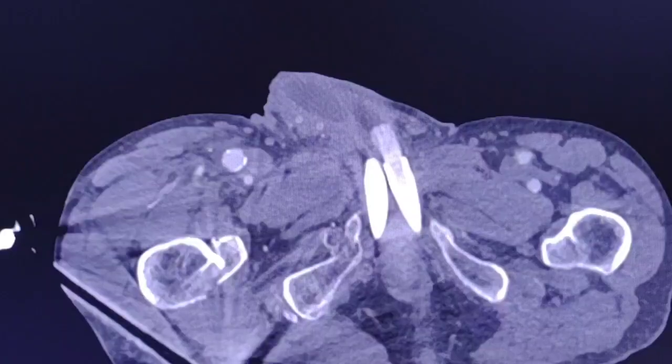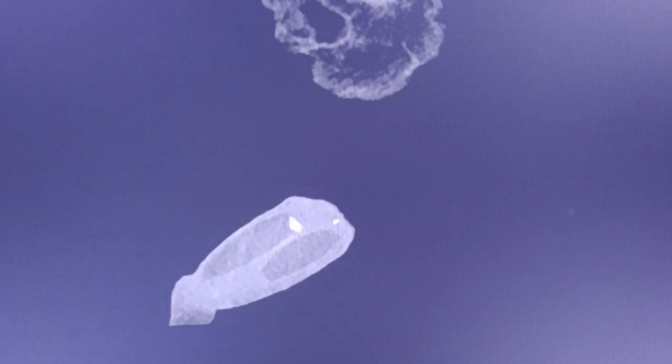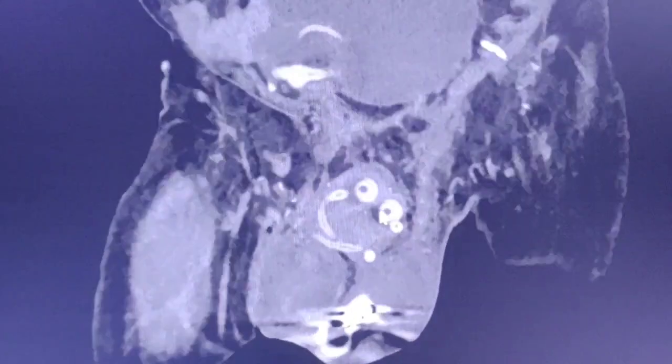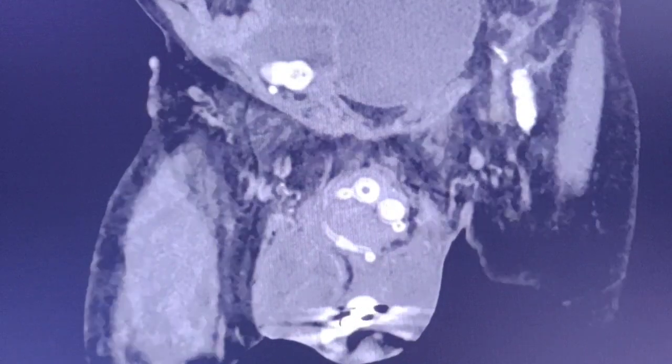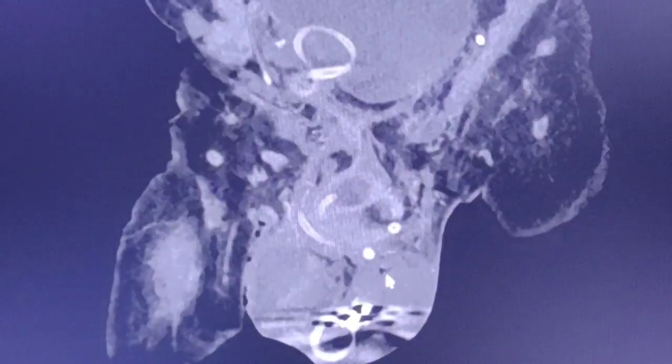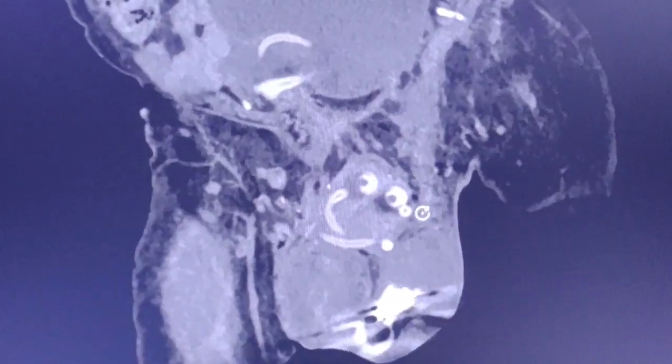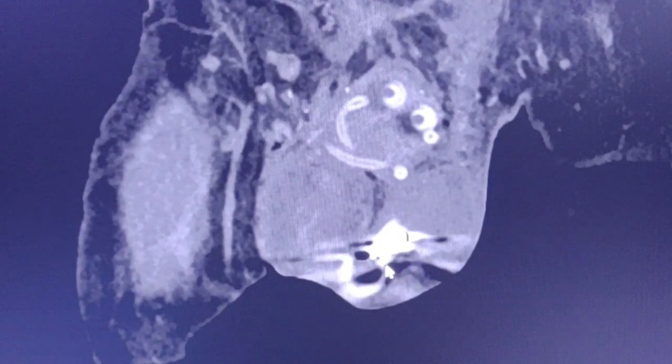Let's have a look in coronal views. Here is the penis and we can see the implants in the corpora cavernosa bilaterally. Let's go a little back and we can see the metal part, the base of the implants, and we can see also the pump in the scrotum here.